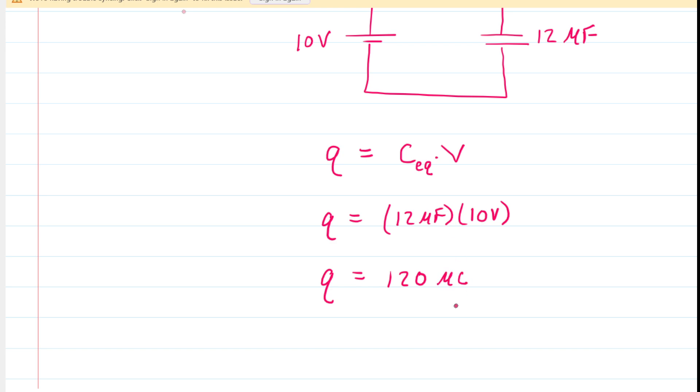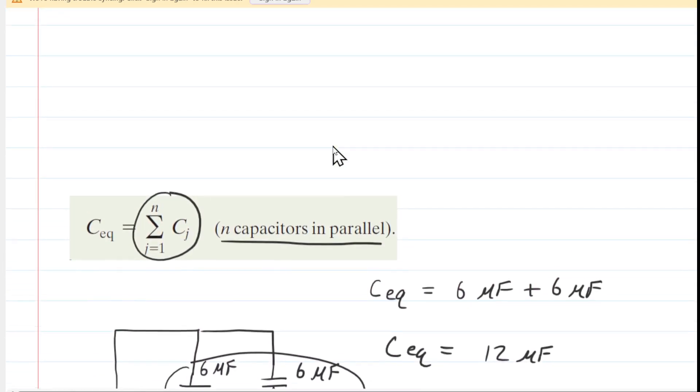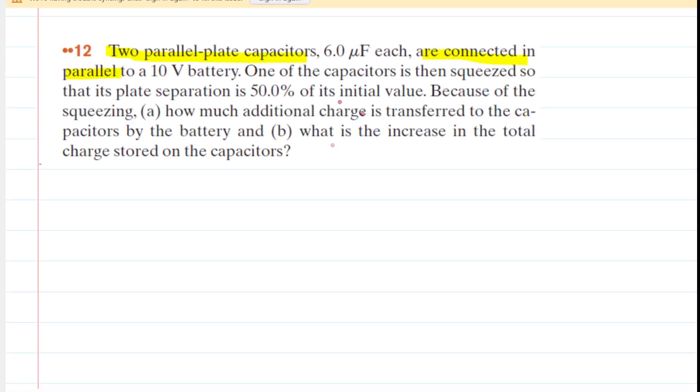That's how much charge is initially stored on our equivalent capacitor. But now we go back and read that one of the capacitors is squeezed so that its plate separation is 50% of its initial value. That's an interesting statement. What effect does that have on the capacitance? If you squeeze the plates together and decrease their separation by 50%, what is the new capacitance?